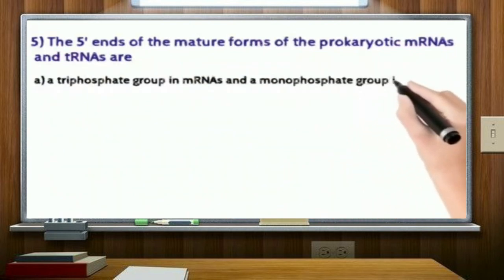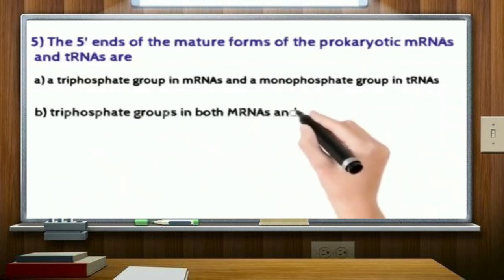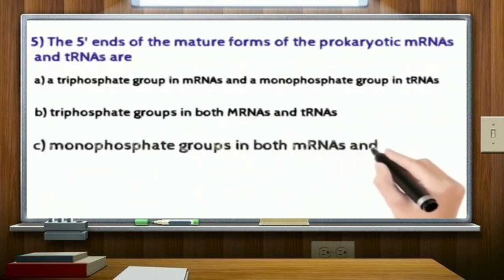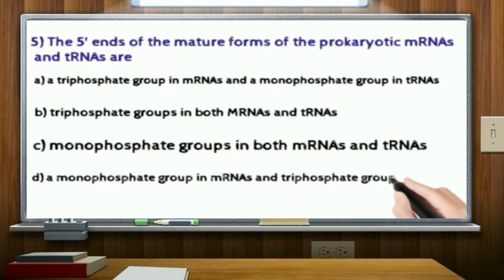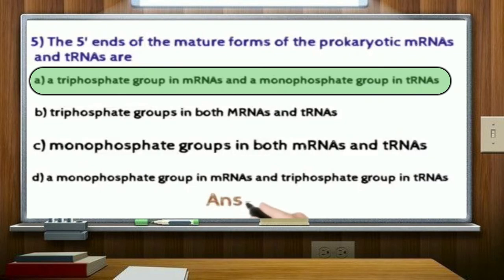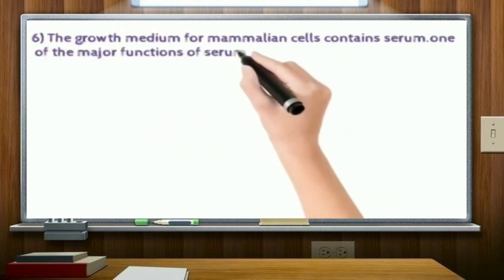The five-prime ends of the mature forms of prokaryotic mRNAs and tRNAs are: option A, a triphosphate group in mRNAs and a monophosphate group in tRNAs; option B, triphosphate groups in both mRNAs and tRNAs; option C, monophosphate groups in both mRNAs and tRNAs; and option D, a monophosphate group in mRNAs and a triphosphate group in tRNAs. Correct answer: option A.